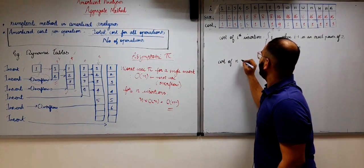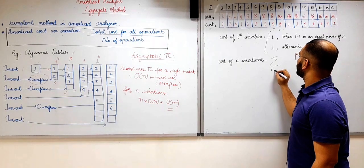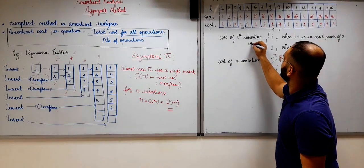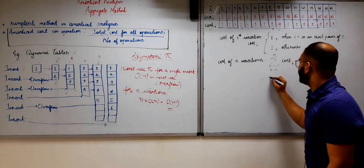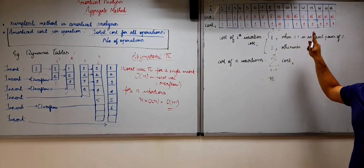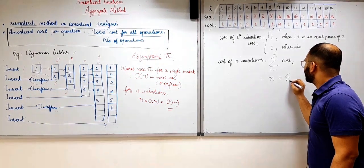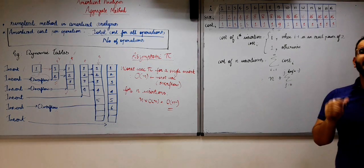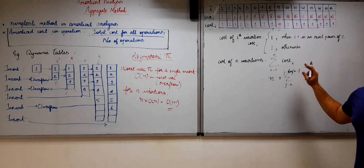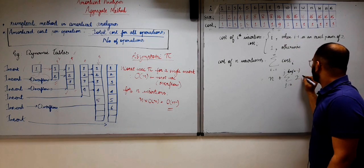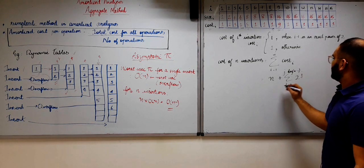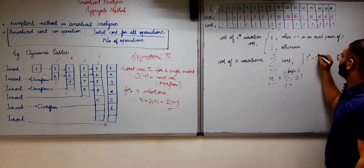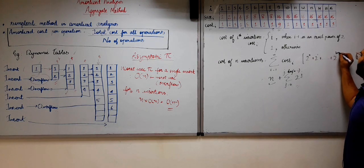To find out the cost of n insertions, we compute the summation from i=1 to n of cost(i). This equals n, since every insertion takes at least 1 unit of time, plus the summation from j=0 to log(n)-1 of 2^j. I want you to tell me in the comments why I am taking 0 as the lower bound and log(n)-1 as the upper bound. The second series expands to 2^0 + 2^1 + ... + 2^(log(n)-1).